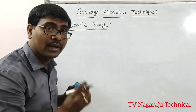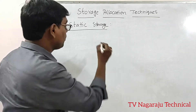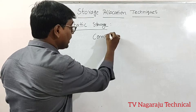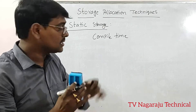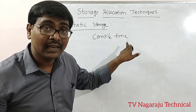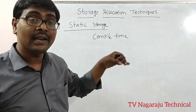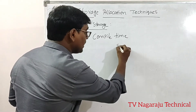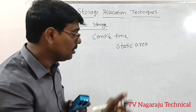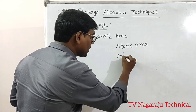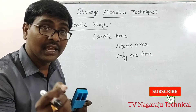Static storage allocation means the memory is allocated to the program at compile time. The name 'static' specifies that memory is allocated at compile time. Memory is allocated inside the static area, and memory is created only one time.